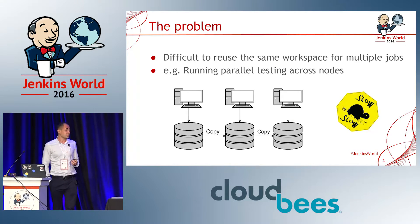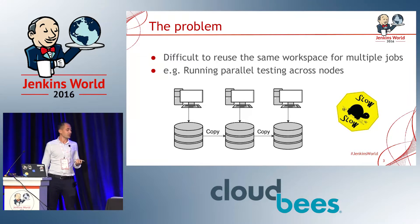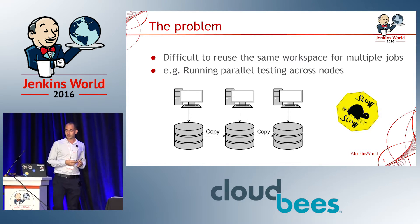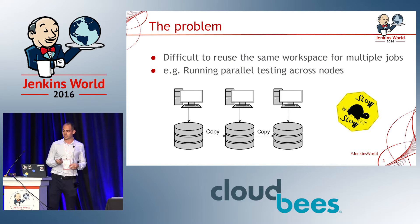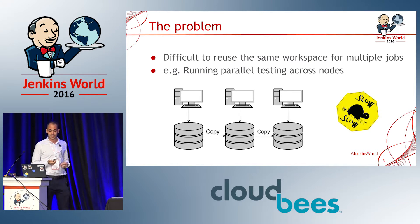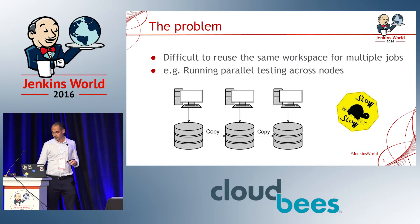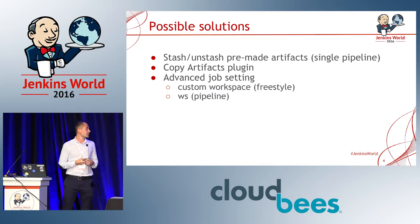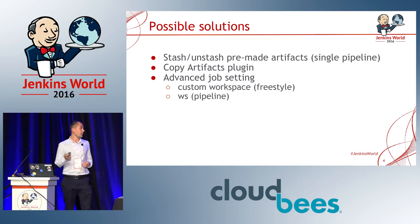One of the problems that some Jenkins users are facing is that it is quite difficult to share and reuse the same workspace for multiple jobs. One use case would be when running parallel testing across nodes. Some builds may have large files and copying them across nodes may prove to be slow. There are some possible solutions like stashing or unstashing pre-made artifacts, but this can be used only in a single pipeline job.